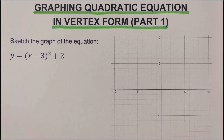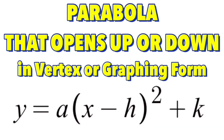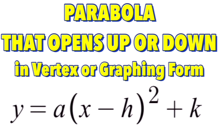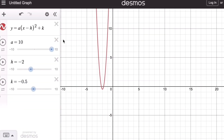Before we jump into the examples, let's have a review on the basics of quadratic equations in vertex form. The vertex form of a parabola that opens up or down is given by the equation y equals a times the quantity x minus h squared plus k. Now let's look at the parameters a, h, and k. If the value of a is positive, the graph opens upward.